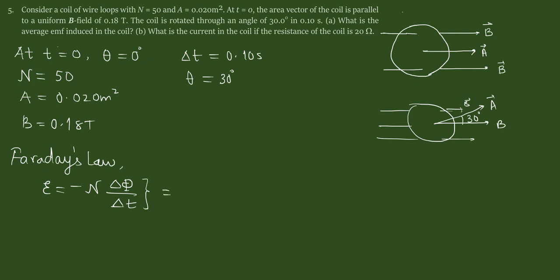So we can neglect this negative sign. This negative sign basically tells us the direction of the current which we will find by using another law called Lenz's law. But for now we'll only find the magnitude of the emf.